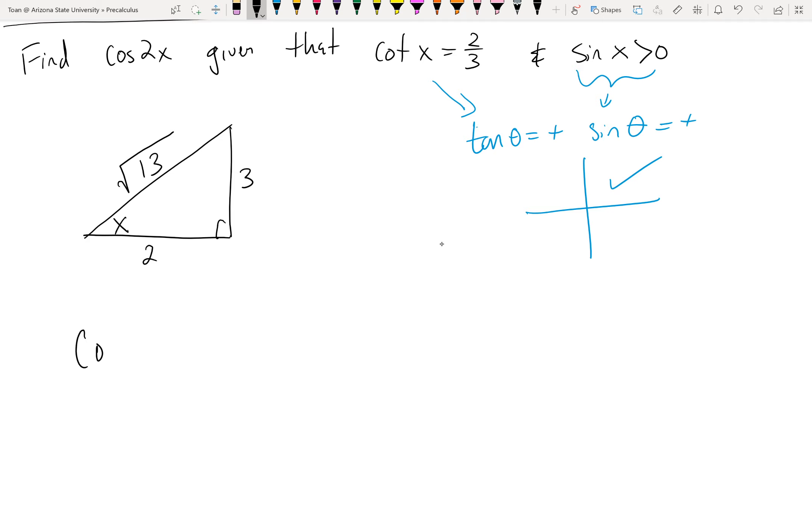And then I just have to use the double angle formula for cosine. Now if you look at the reference sheet, the double angle formula for cosine has many variations—it has three variations—and it really doesn't matter which one you use. Just because it comes first, I'll use the first variation, so that's cosine squared x minus sine squared x.